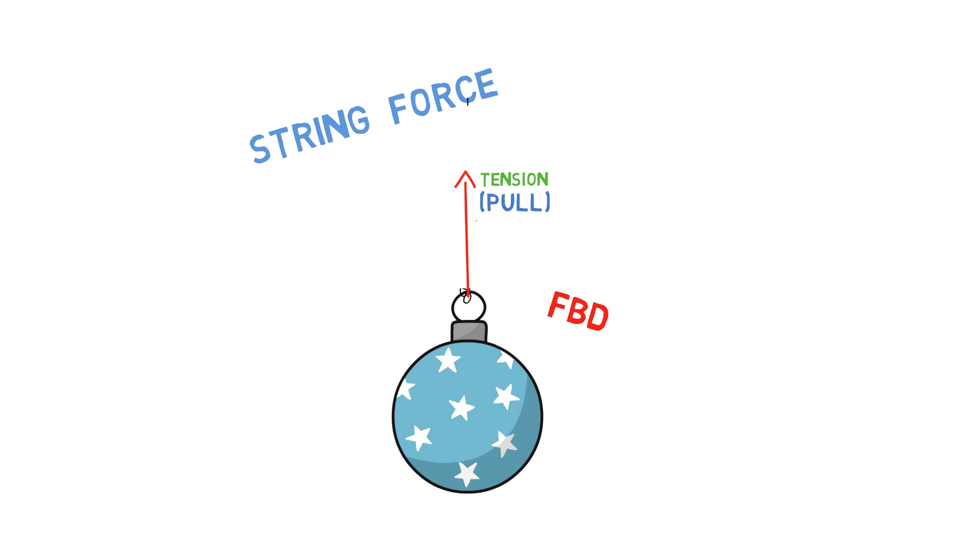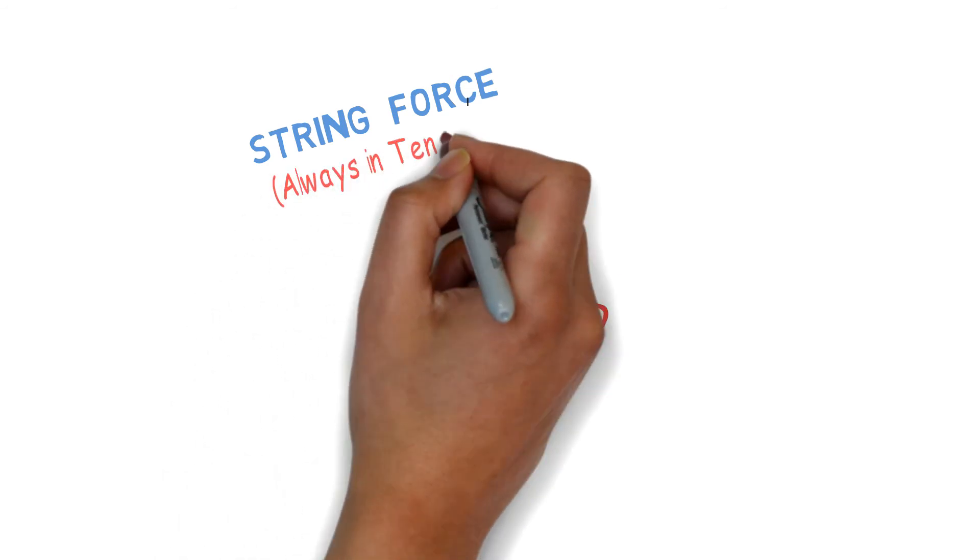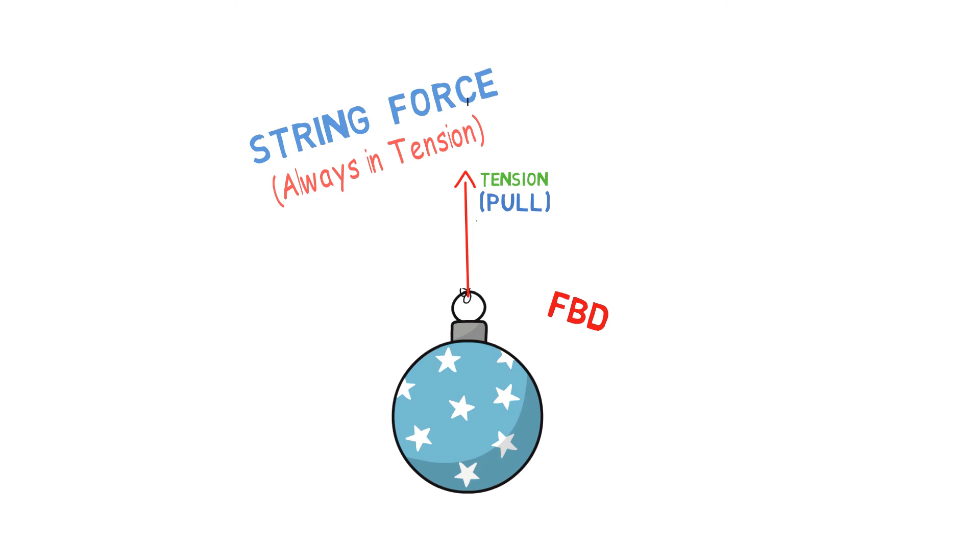This string would in return pull the body, passing this tensile force within itself onto the object. Hence, whenever a string or a cable is attached, the force will always act along the string and in the direction away from the body, indicating tension.